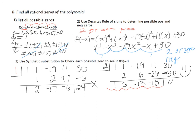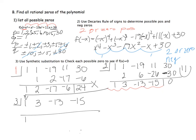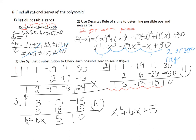Now let's try 3. Using the new coefficients 1, 3, −13, −15: bring down 1, multiply to get 3, add to get 6, multiply to get 18, add to get 5, multiply to get 15, add to get 0. Found another zero! What's left is x² + 6x + 5, and I can factor that.